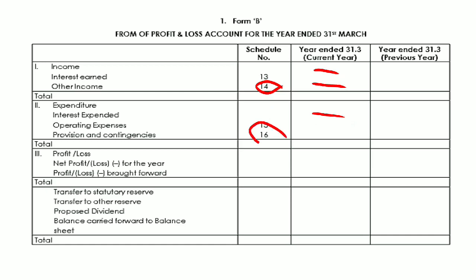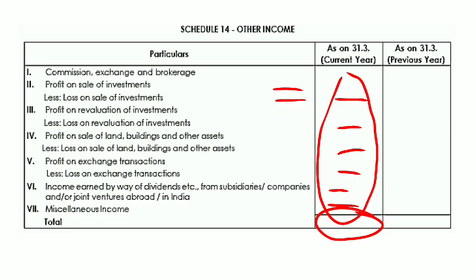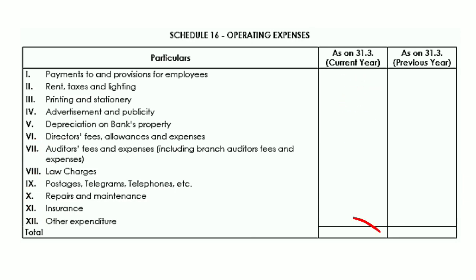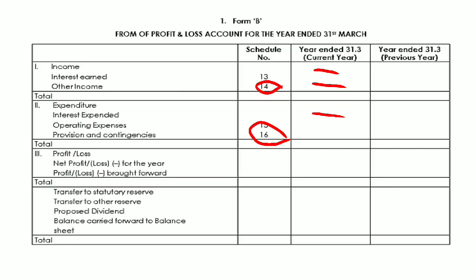Schedule 16 is Operating Expenses, also called running expenses. It includes payment to and provision for employees, rent and buildings, printing and stationery, advertising and publicity, depreciation on bank property, directors fees, allowance expenses, auditors fees and expenses, law charges, postage, telegram, telephone, repairs and maintenance, insurance, and other expenses. All operating expenses are totalled under Schedule 16.